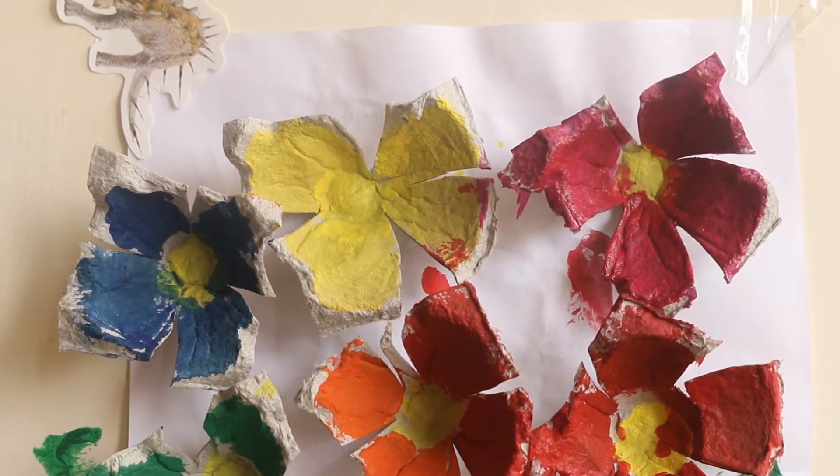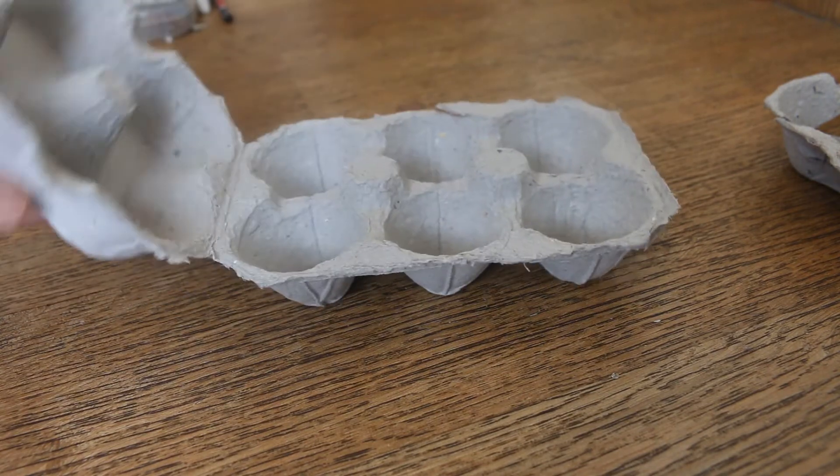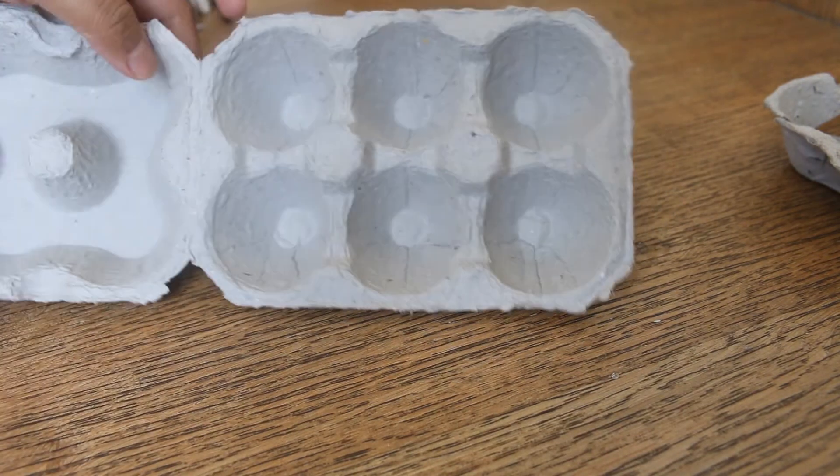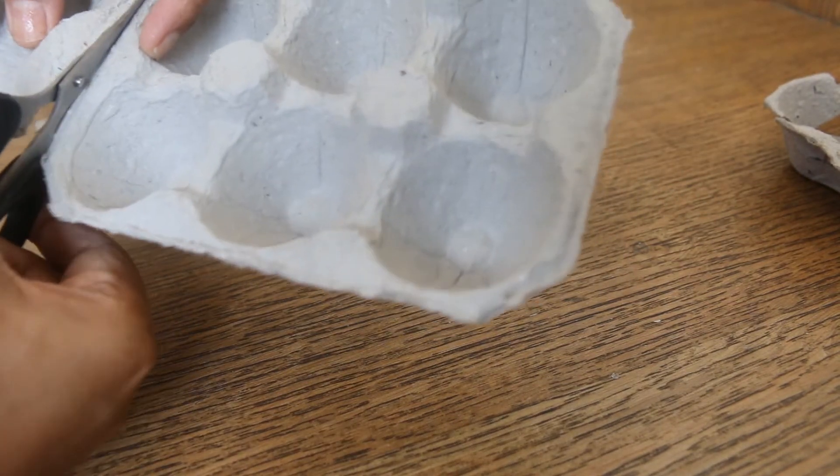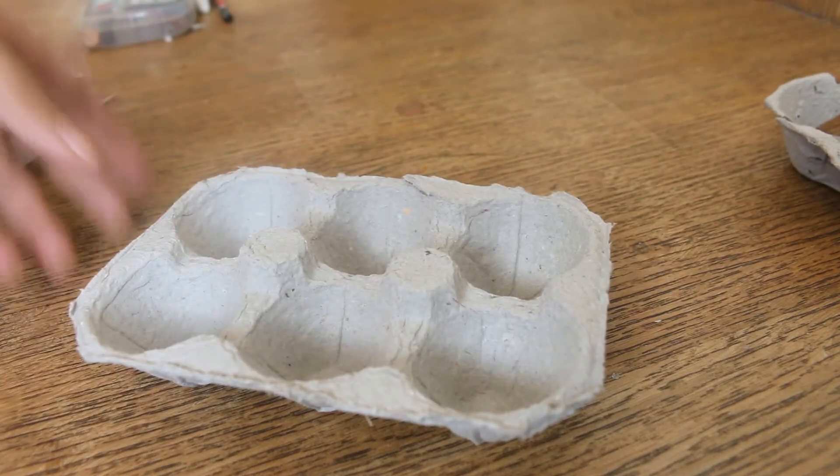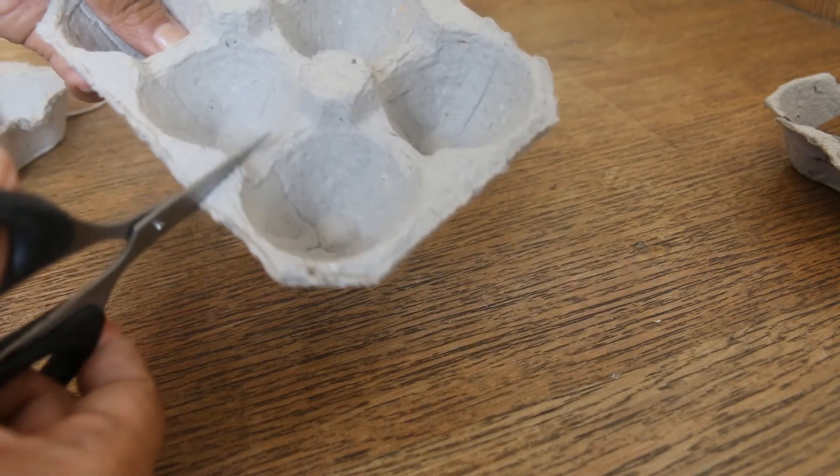For this activity, I've taken an egg carton and I'm going to cut out the egg pots from the carton and start making flowers with these pots. You just have to trim it in a way of your choice and make flowers out of it.